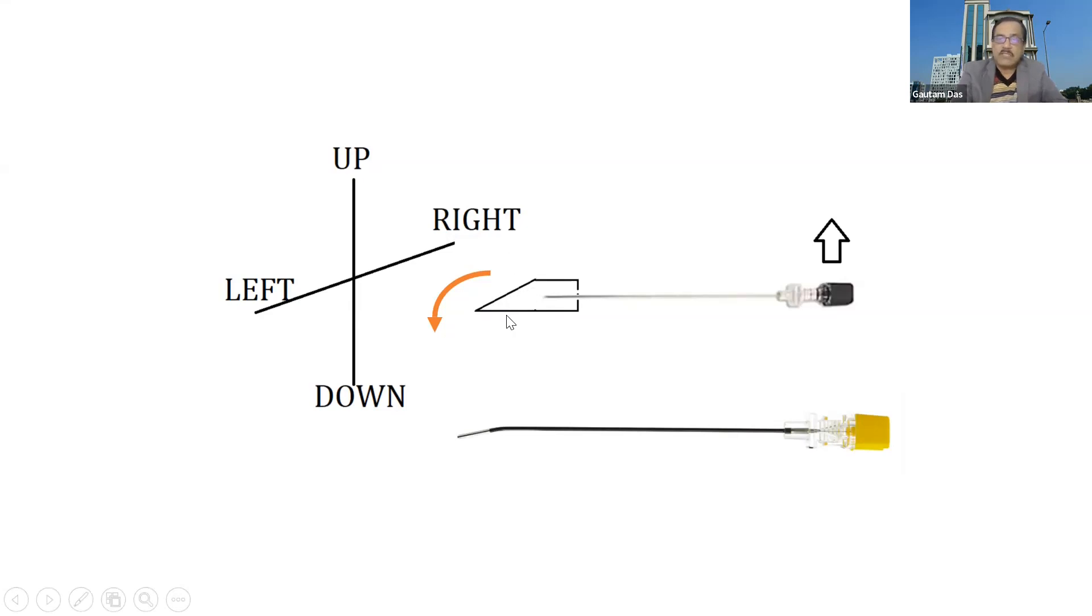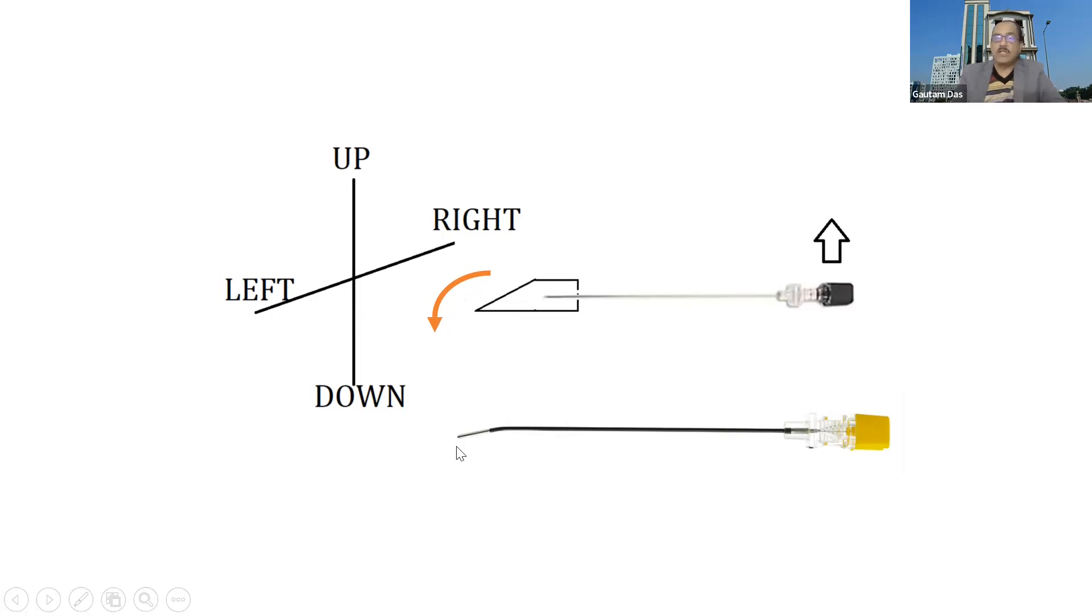If the bevel is up, then the needle bend should be down. Why? Because the needle will be trying to go down, and if your bend is also on the down side, that will help it go down, and vice versa.